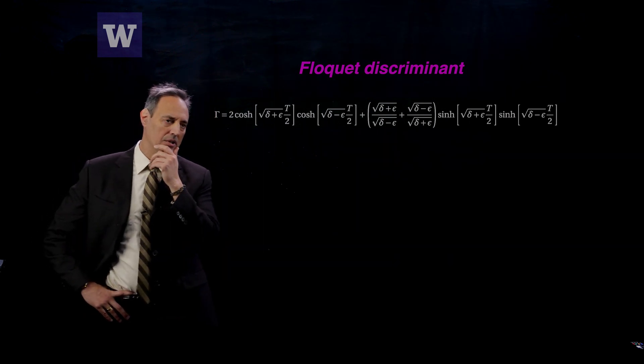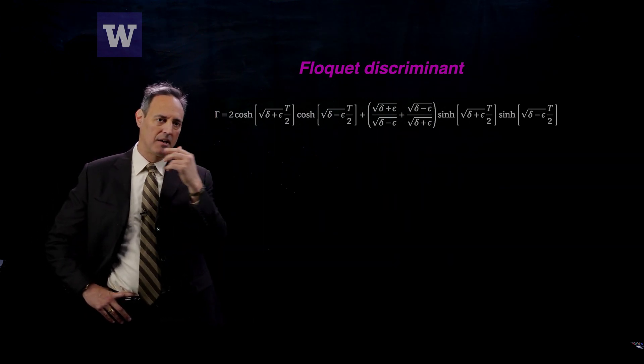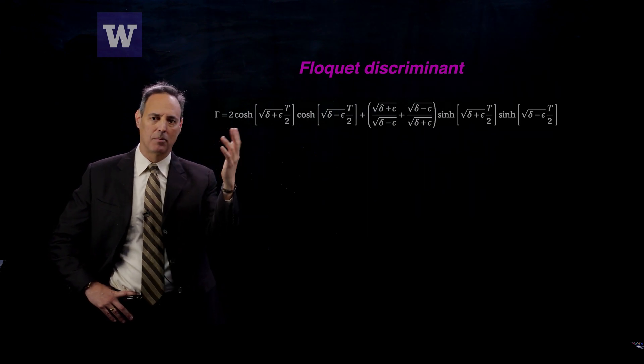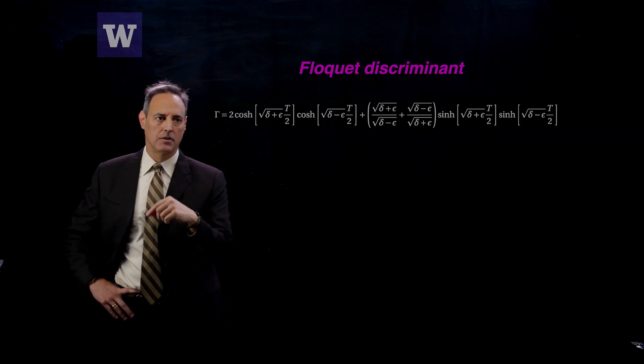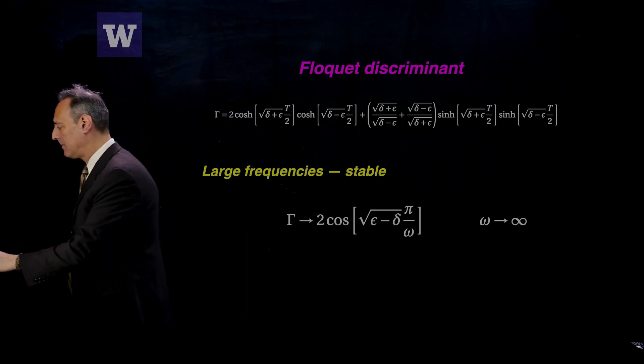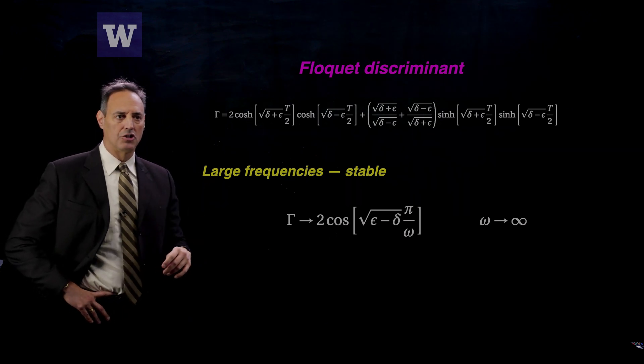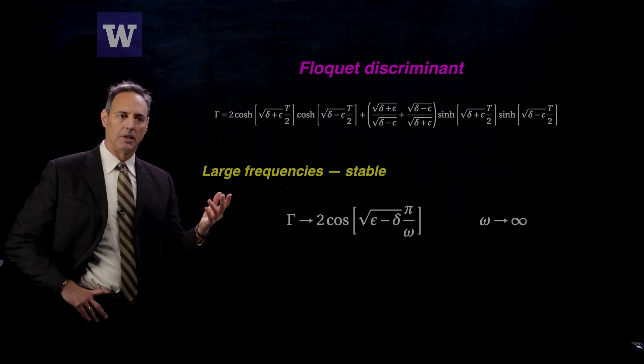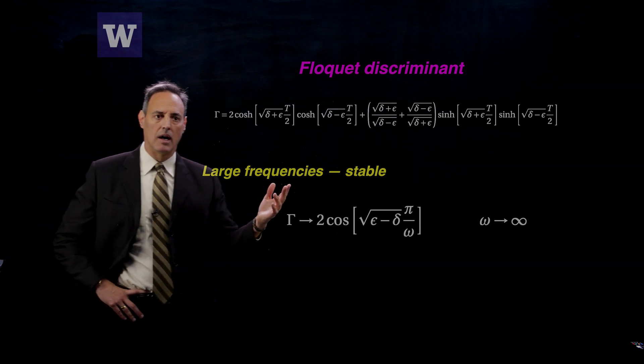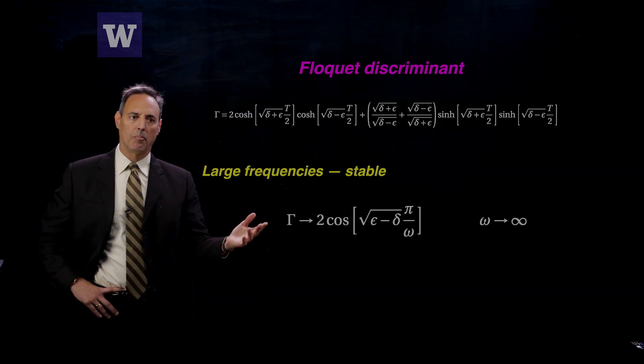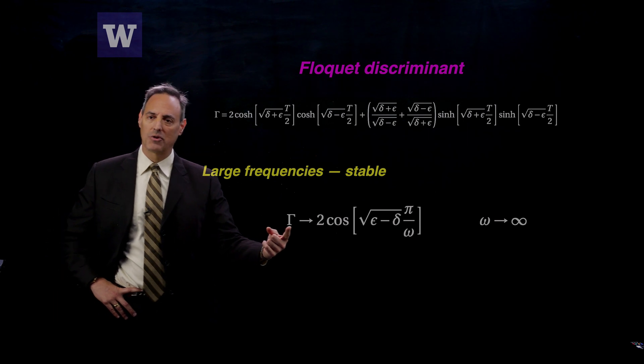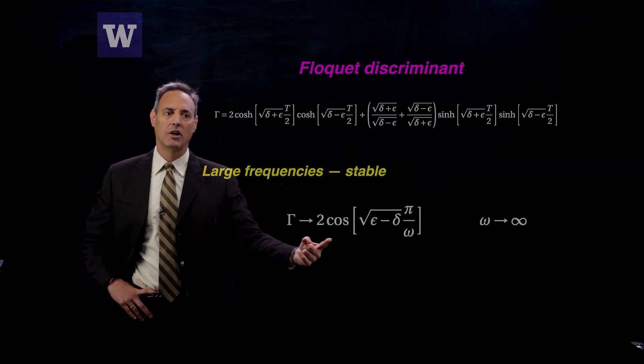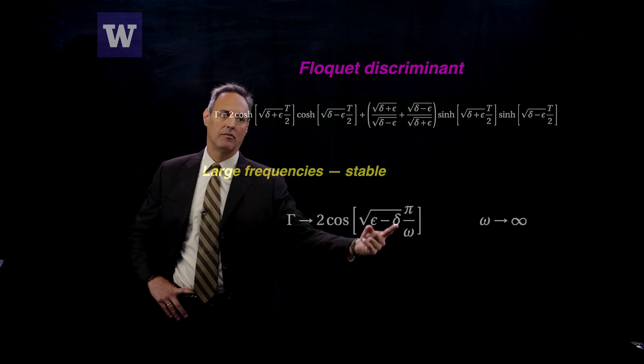So a couple things to notice, these are complex, complicated expressions, but I can just plot them on MATLAB or any other kind of software tool you want, but I do want to highlight this first. If you take omega to be big, in fact, this is one of the calculations you can show, is for large frequencies, what's going to happen with this thing here, it's going to be stable because this Floquet discriminant is going to go, if you take it into this asymptotic limit, you can actually show that this thing collapses to 2 cosine square root epsilon minus delta pi over omega.